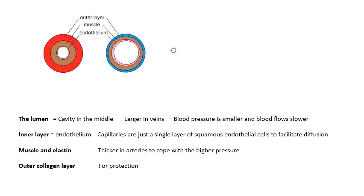The structure of arteries, veins, and capillaries: the lumen is the cavity in the middle, and it is larger in veins where blood pressure is lower and blood flows slower. The inner layer is the endothelium, and all vessels have one. Capillaries are basically just an endothelium — a single layer of squamous endothelial cells — which enables diffusion easily through such a thin layer. There is a muscle and elastin/collagen layer which is thicker in arteries because the pressure is higher. In some major arteries, the artery itself helps to pump the blood — there is a pulse in the artery. There is also an outer collagen layer for protection.